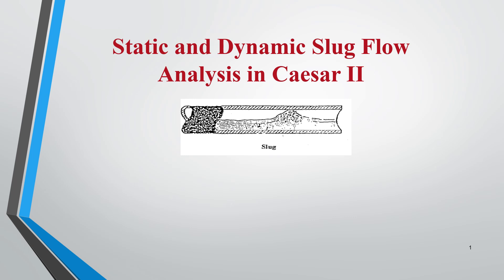Good day everybody. Today we will be learning about static and dynamic slug flow analysis in Caesar 2 software. Caesar 2 is a software developed by a company called Hexagon — initially it was developed by Coade, and then Hexagon took it over. In this image you can see that a slug is getting formed in a line. In this full tutorial we will be learning the methodology of performing slug flow analysis in Caesar 2 software in two methods: one is called the static equivalent method and the other is the dynamic method, where we will be using the dynamic response spectrum method.